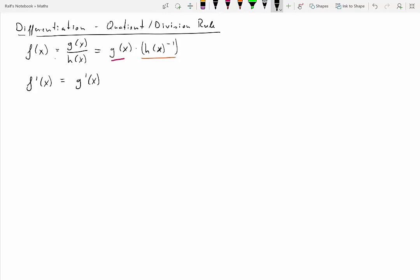So we know that if you apply the product rule, what we need is g prime of x times h of x to the negative one, that's just the orange bit, plus g of x times the derivative of the orange part.